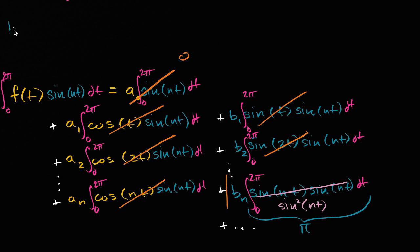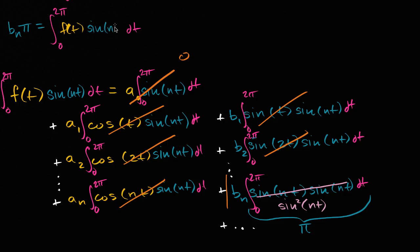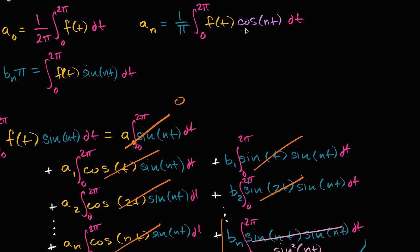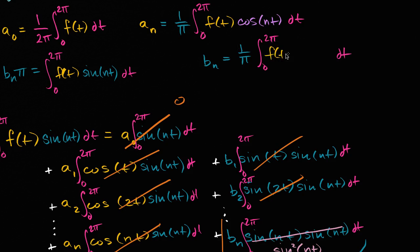We can write: b sub n times pi is equal to — because everything else becomes zero — the definite integral from zero to two pi of f of t times sine of nt dt. Dividing both sides by pi, we get b sub n is equal to one over pi times the definite integral from zero to two pi of f of t times sine of nt dt.